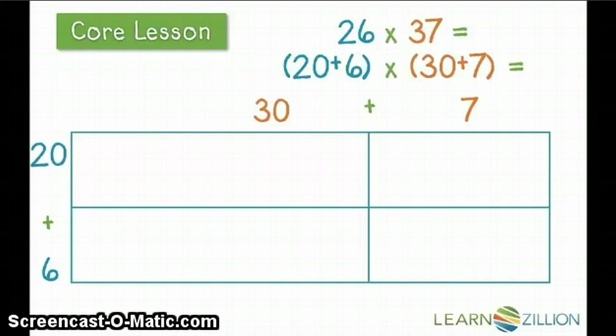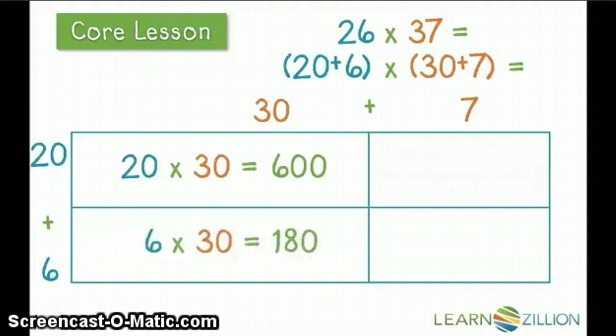Our next step is to fill in the number sentence for each section. I'm going to begin with the 30s column. 20 times 30 and 6 times 30. Now all that's left is the 7s column.